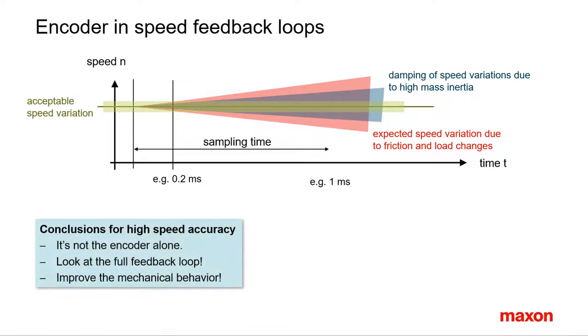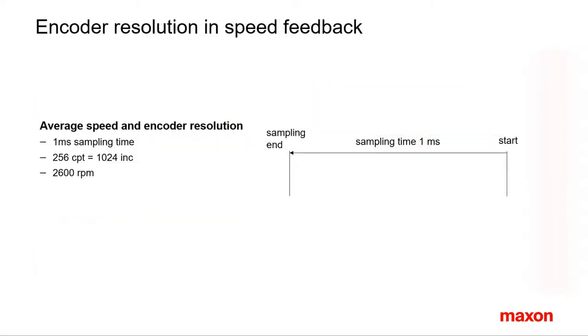These considerations show that it is not the encoder resolution alone that defines the quality of speed control. Mechanical aspects such as friction, mass inertia as well as controller properties are important. What are the main considerations regarding encoder resolution in speed feedback?